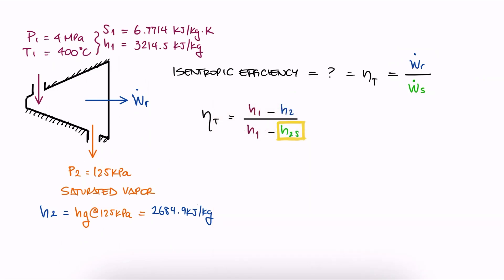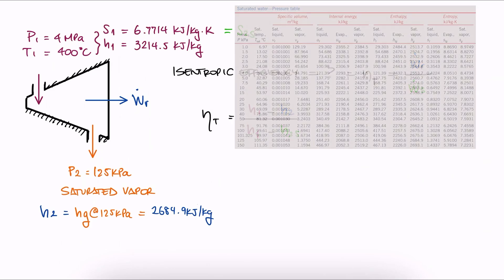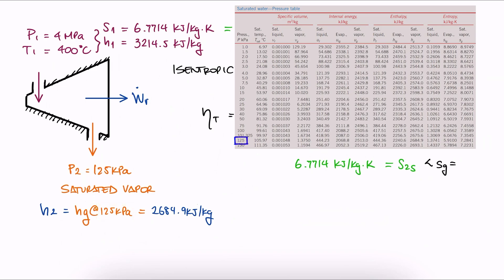For the isentropic case, we have s2s from s1. From our saturated tables, by pressure, we see that for a pressure of 125 kilopascals, that s2s value lies between sg and sf.